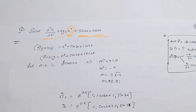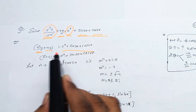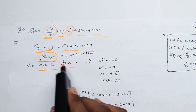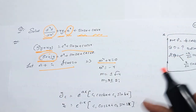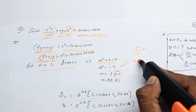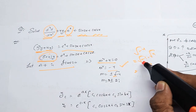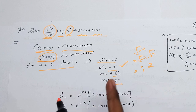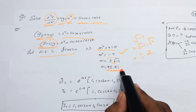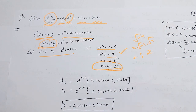This is the value of d²y + 4y. Same value — y is common, so d² + 4 is equal. This is the auxiliary equation: m² + 4 = 0. So m² = −4. Root of minus 4 is root of minus 1 into root 4. Root 4 is 2, root of minus 1 is i. So m = 0 ± 2i.